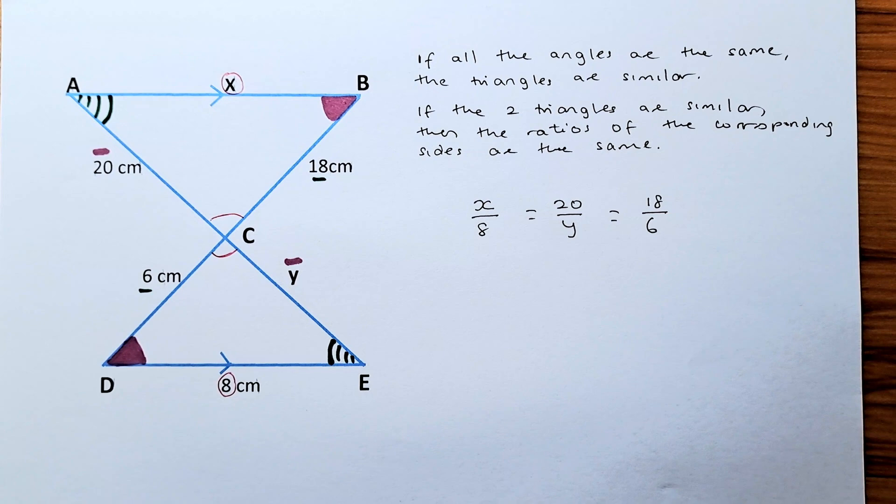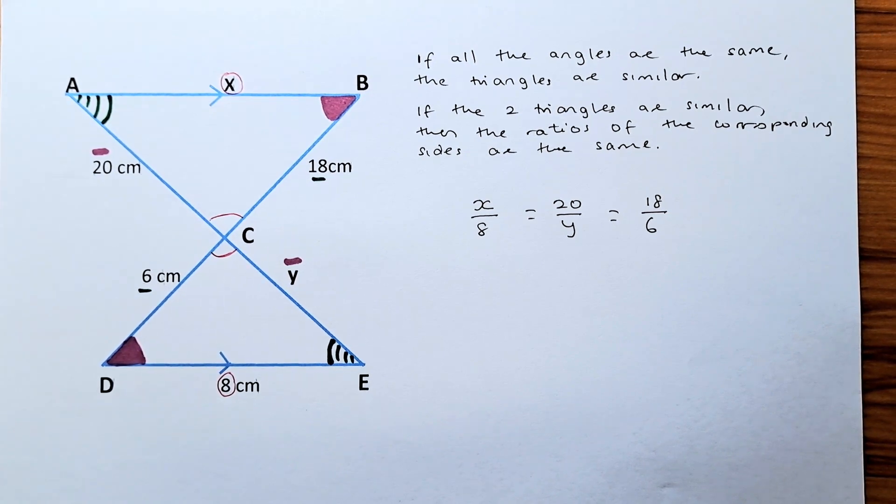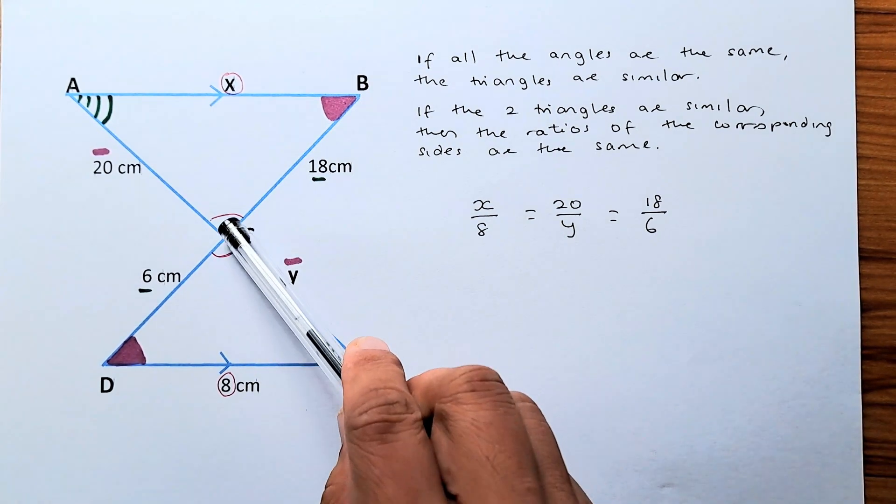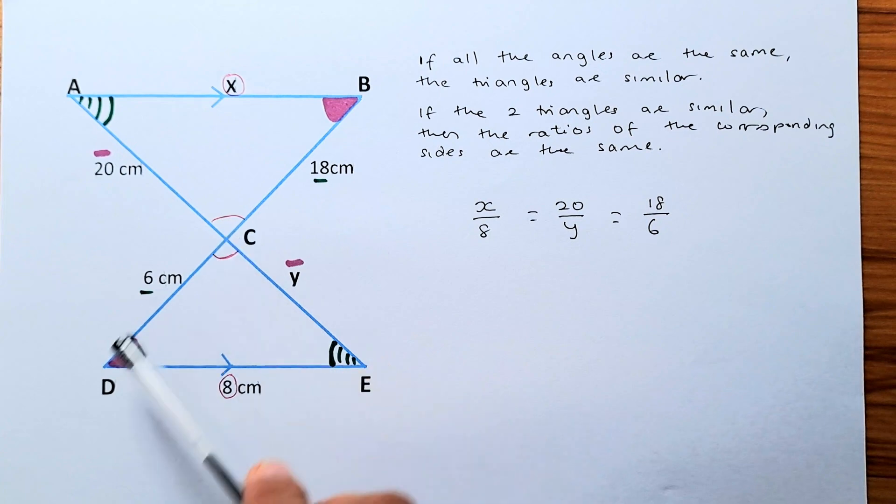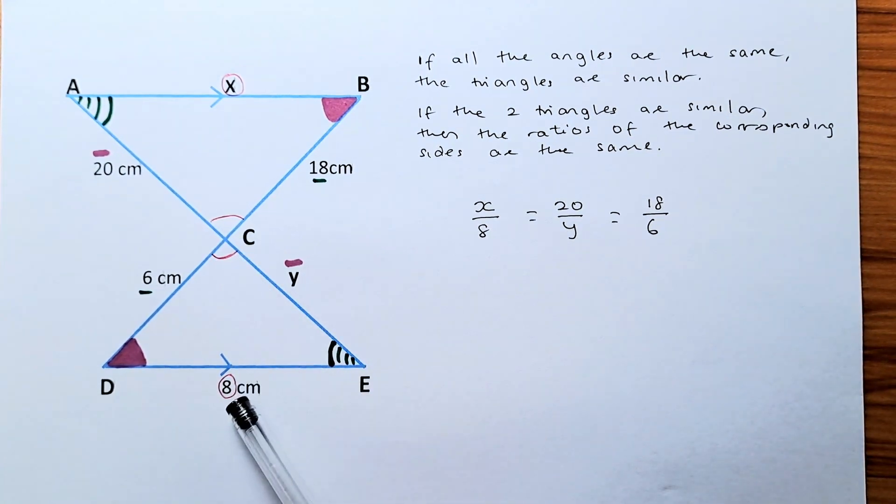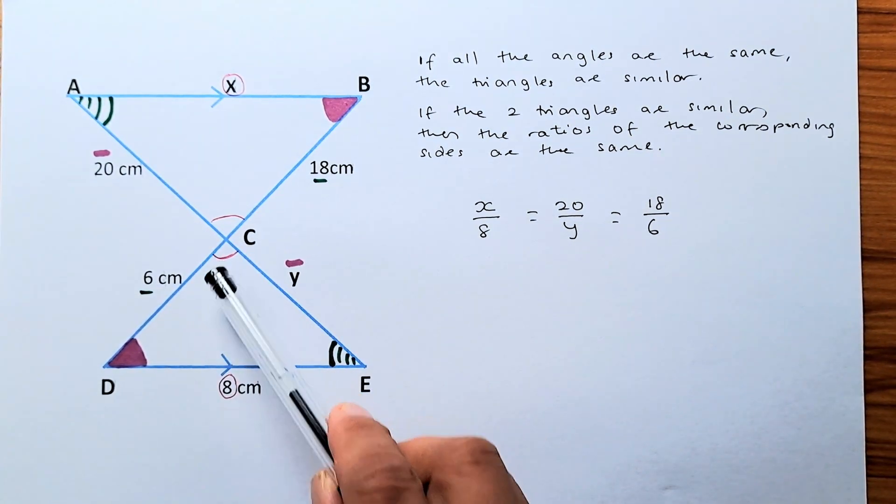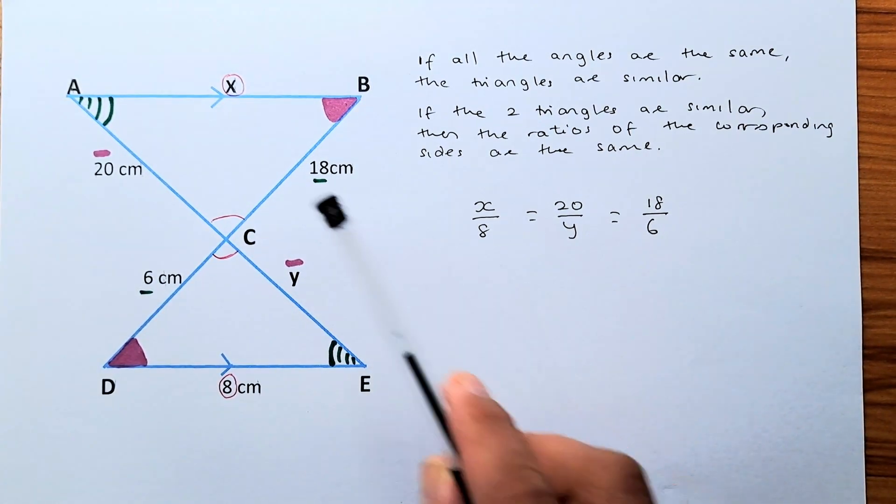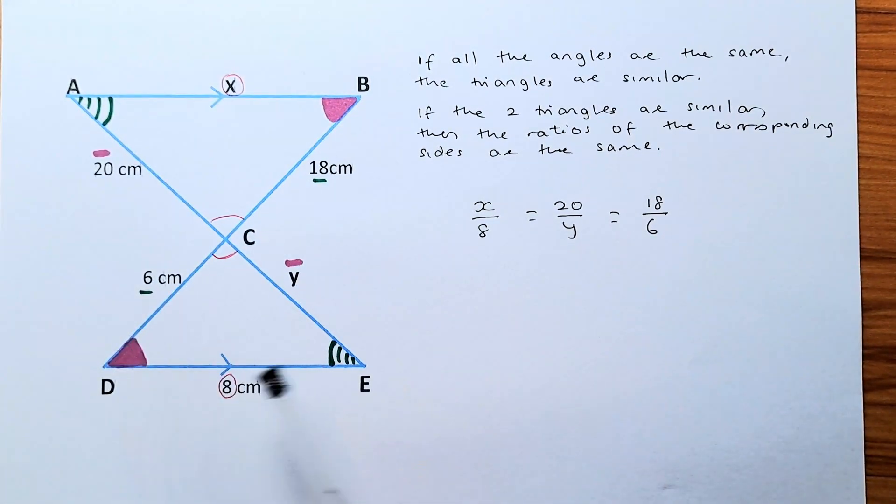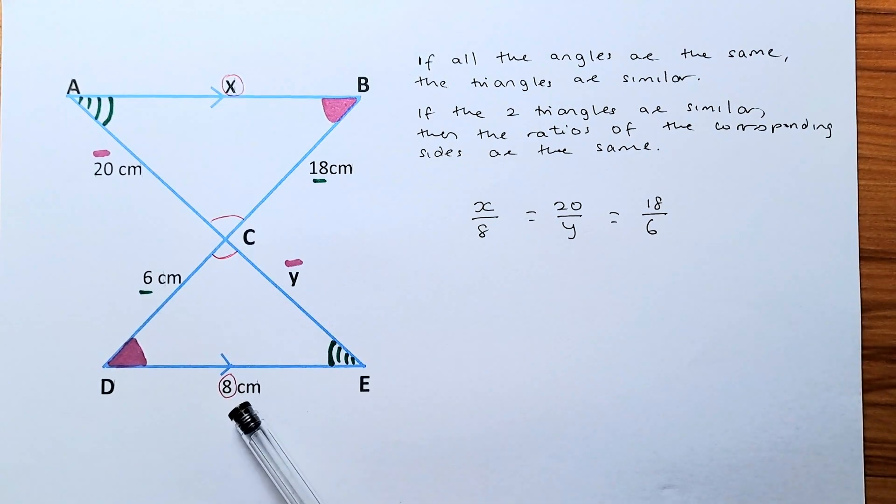If they are similar then the ratios of the corresponding sides are the same. So let's find the corresponding sides. So angle C, the opposite side of angle C here is X. So X, and in the other triangle, the opposite angle is 8. So the sides of the opposite angle is 8. So X is corresponding to 8. So we take the top triangle over the small triangle. So X is equal to 8, the ratio.